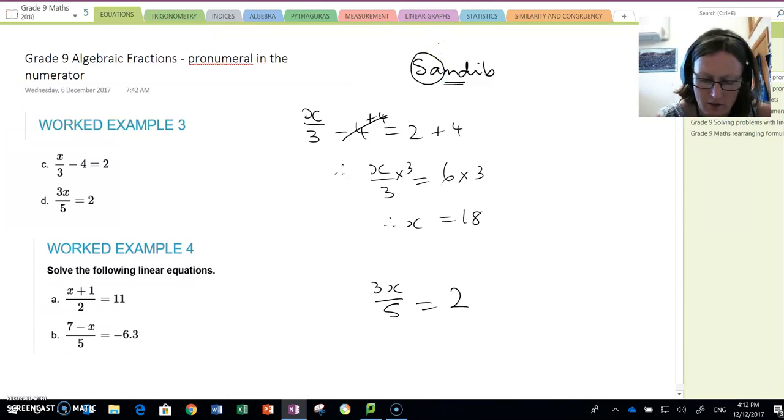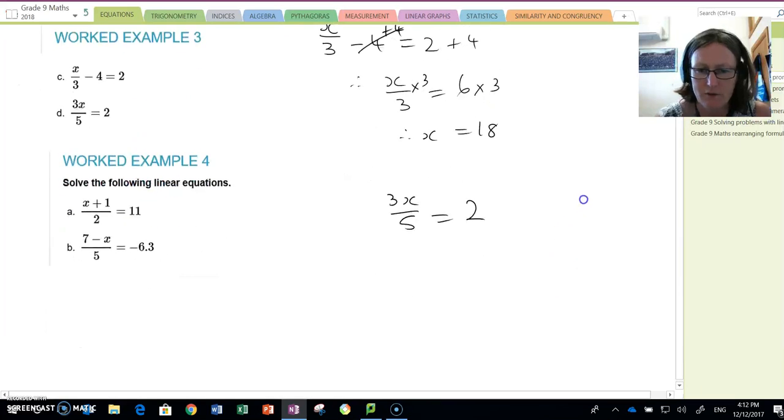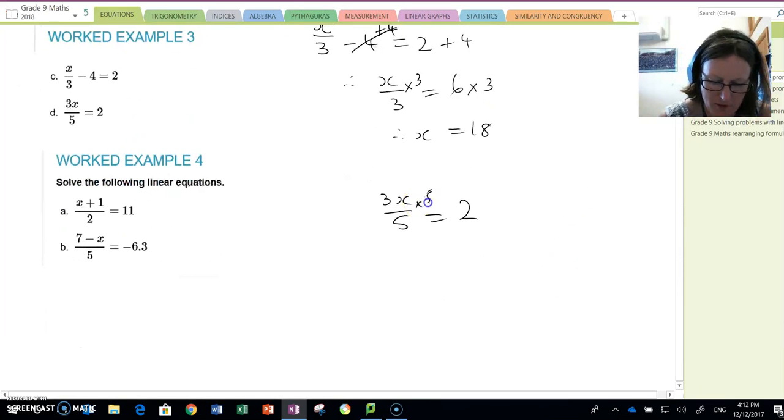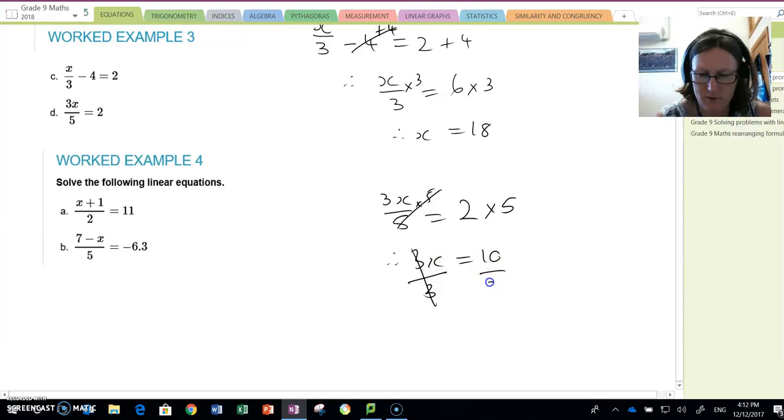Subtraction and addition, you're going to undo at the same time and multiplication and division. So I'm going to times both sides by 5. So then I've got 3x is equal to 10. Then I'm going to divide by 3 to get that to cancel. So x is equal to 10 over 3.